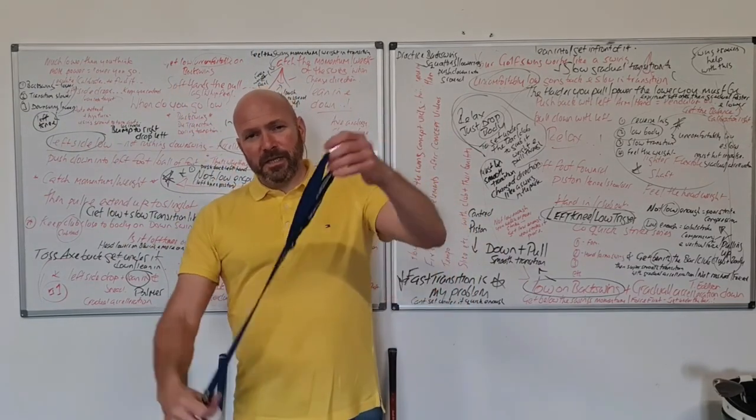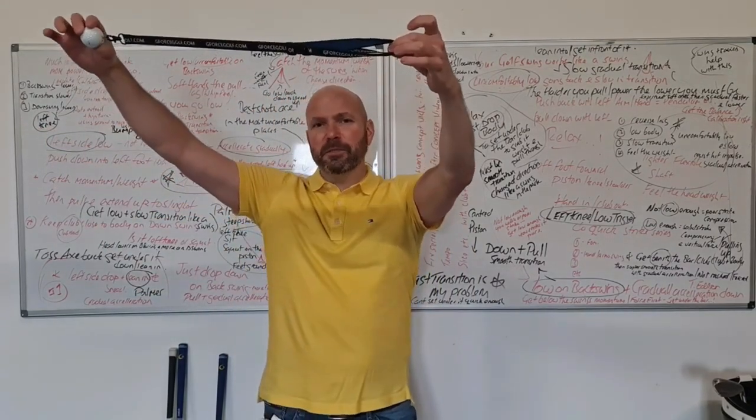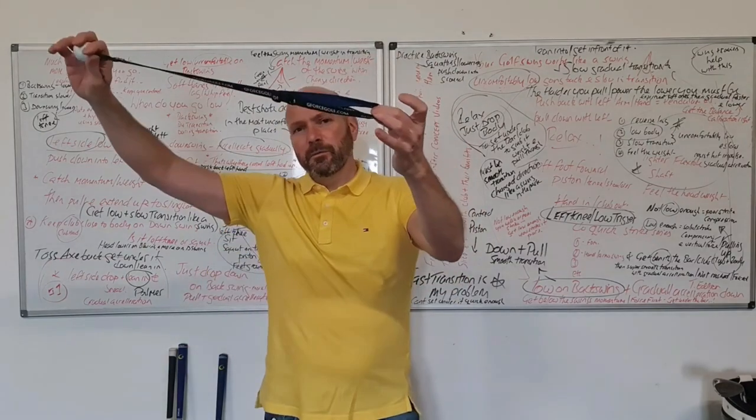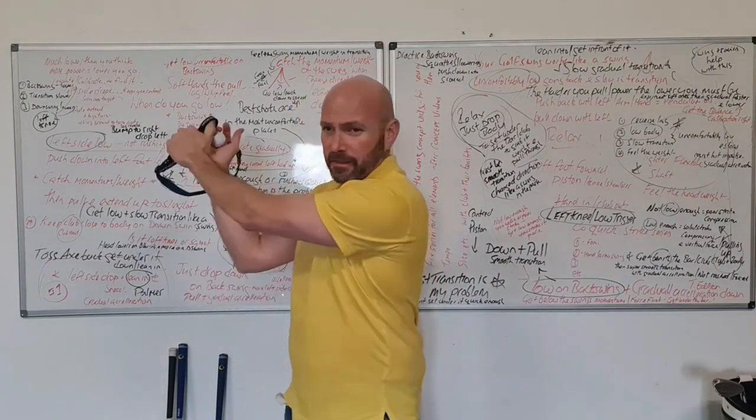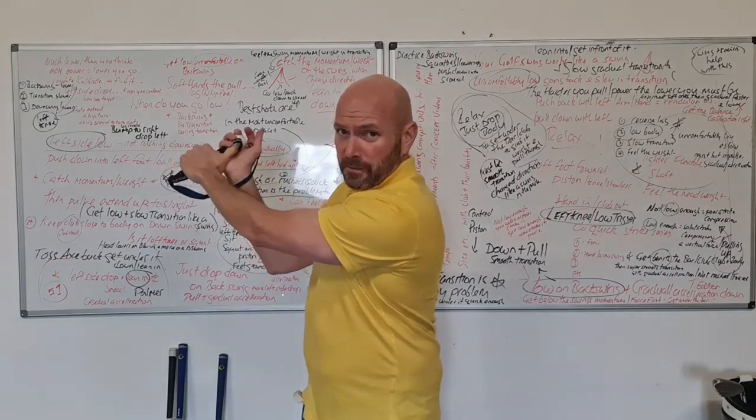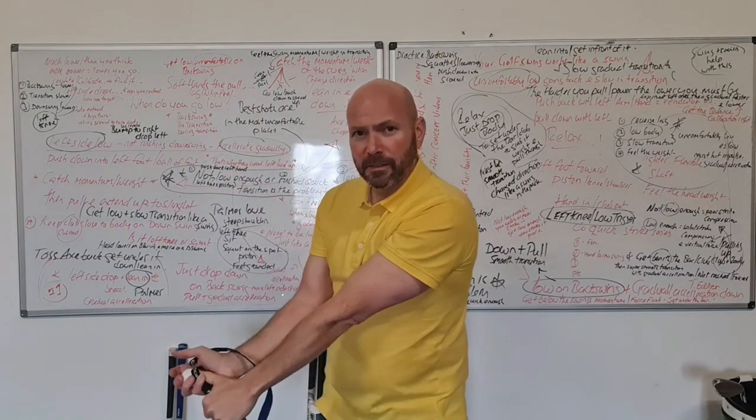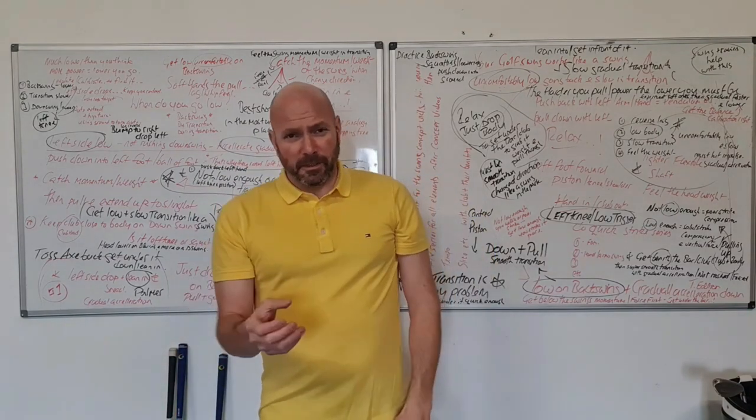The downswing is a gradual acceleration. We're not looking to go super quick. I can show you that in Gears in 3D where the hands go from slowing down and stopping and accelerating from zero to 20 miles an hour to about the halfway point, and then they slow down again as the club releases.